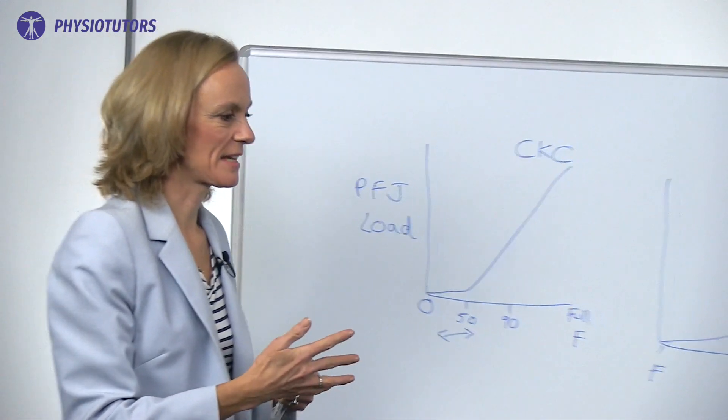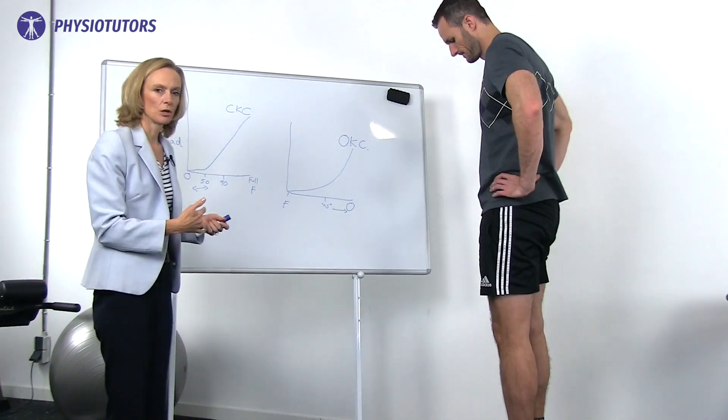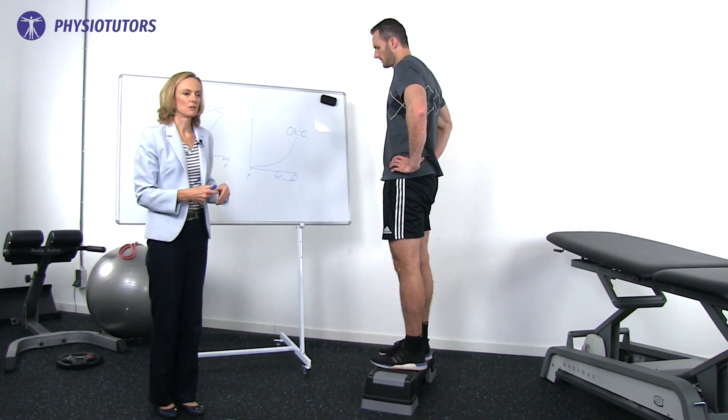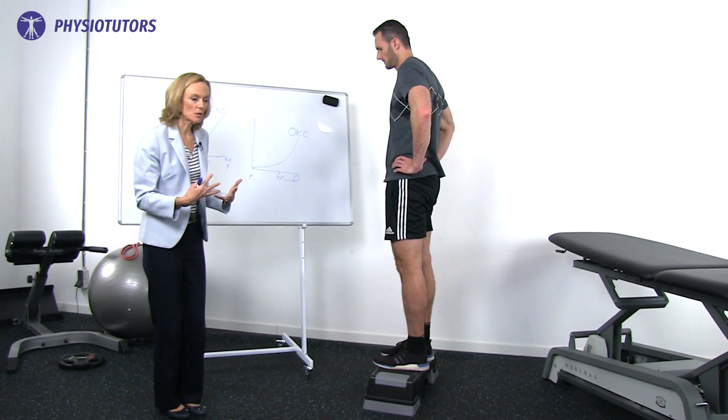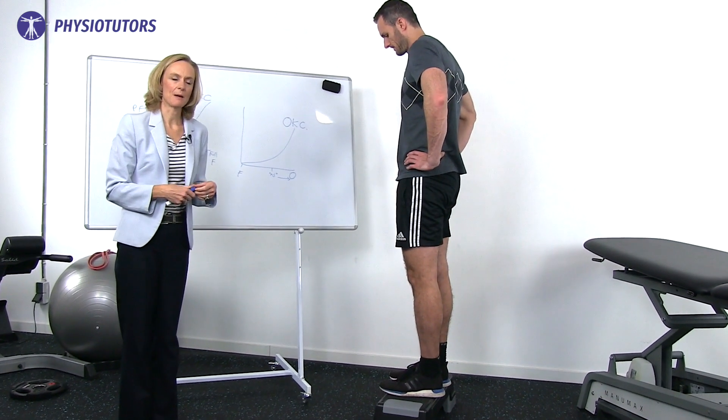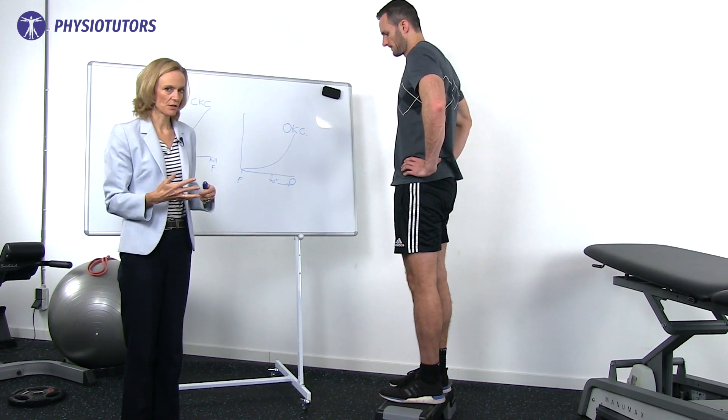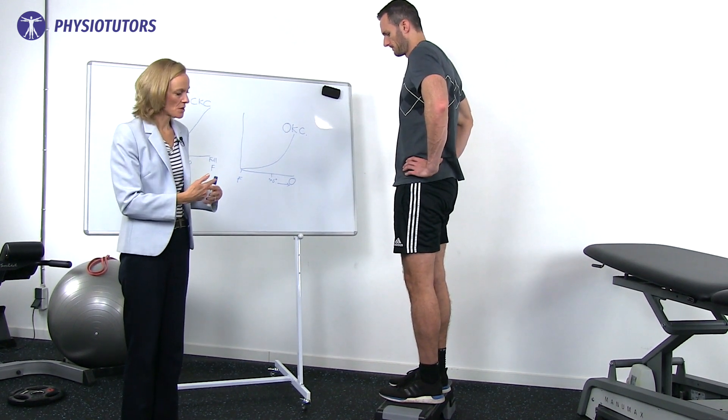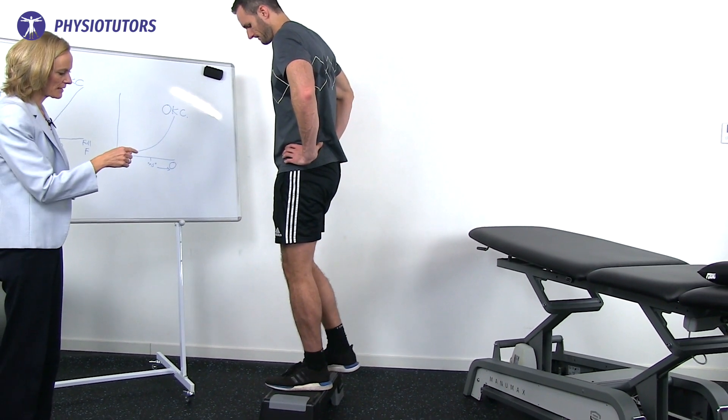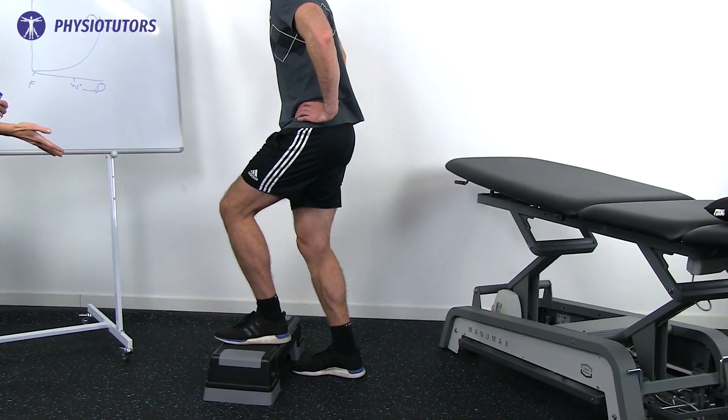The first exercise is our eccentric component, it's a step down. Lots of patients really struggle with stair descent and they don't like that loading forwards onto the patellofemoral joint, but they need that ability to lower with control. So we take that eccentric function but we do it backwards so they don't load up as heavily in the joint.